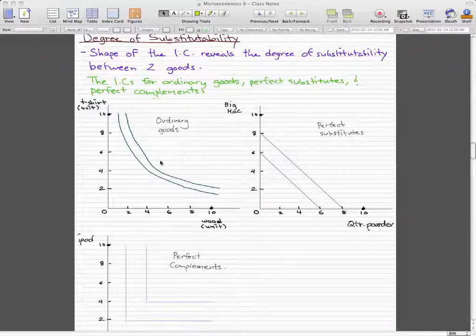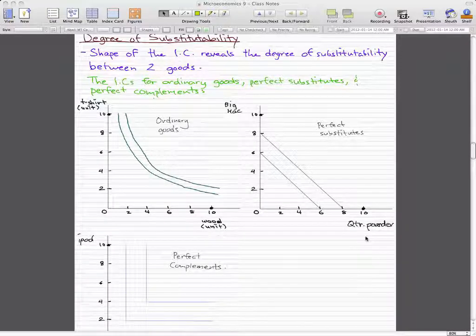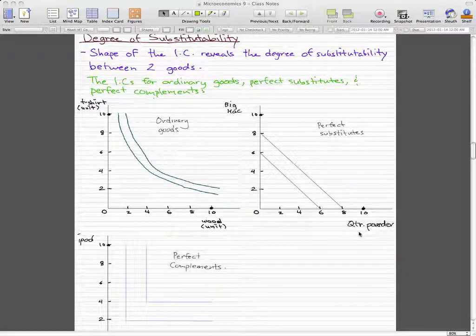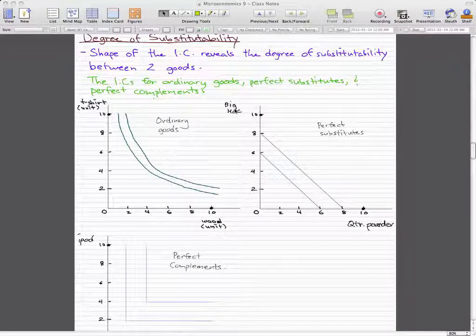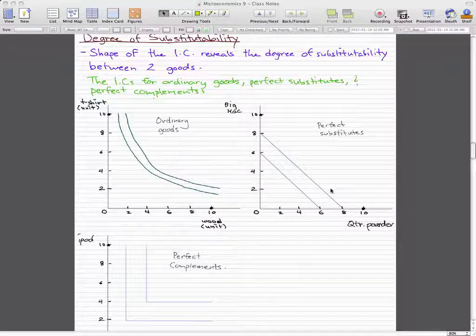Now for perfect substitutes, the line is just a straight parallel line. Good substitutes would be Big Mac and Quarter Pounder for me, but might be different for you. So for perfect substitutes, the shape is a straight line.